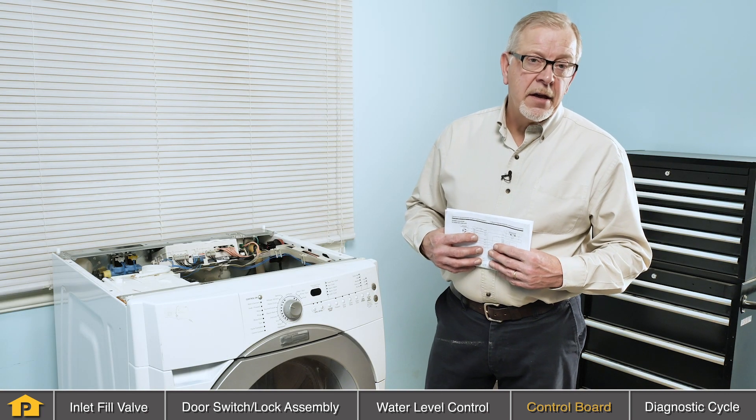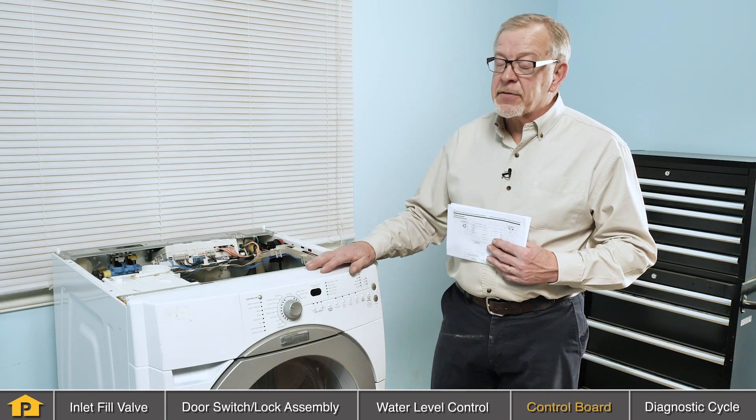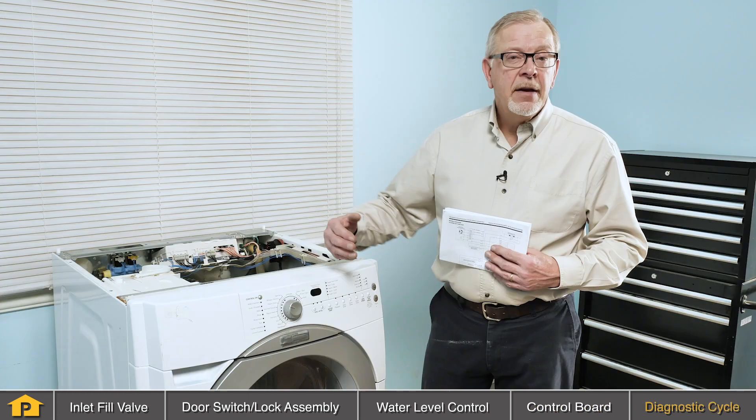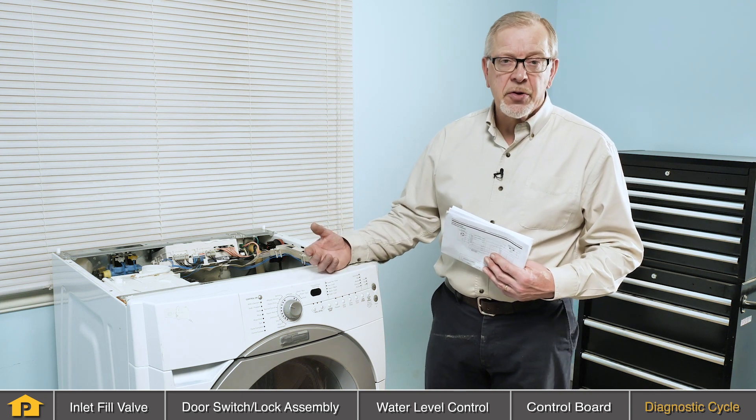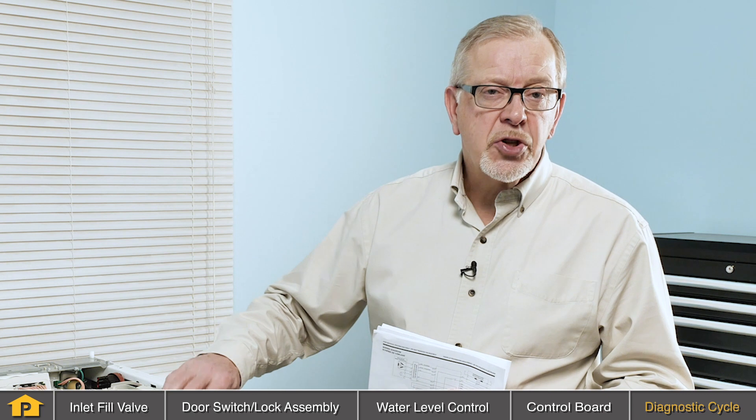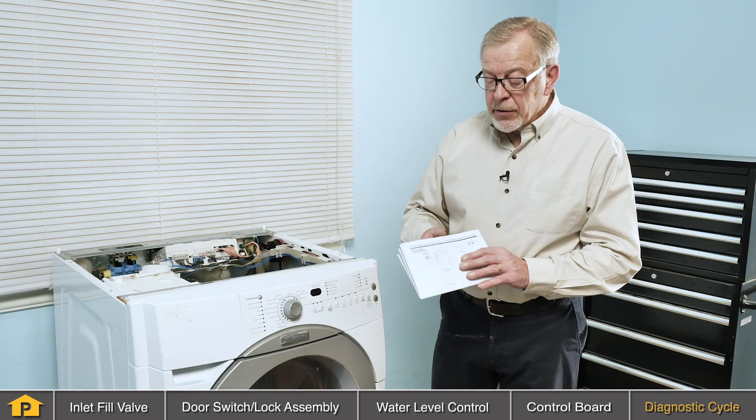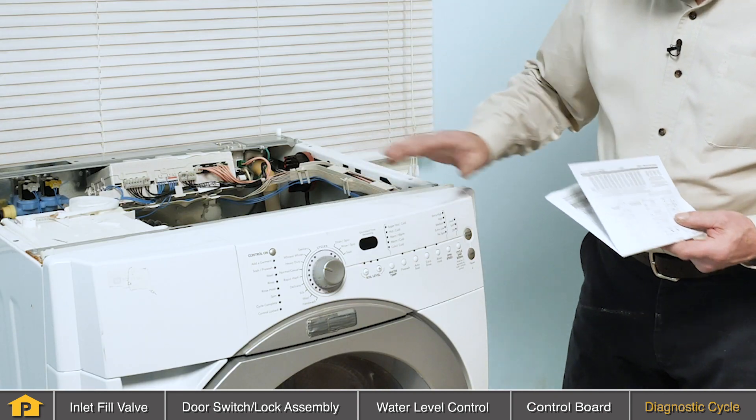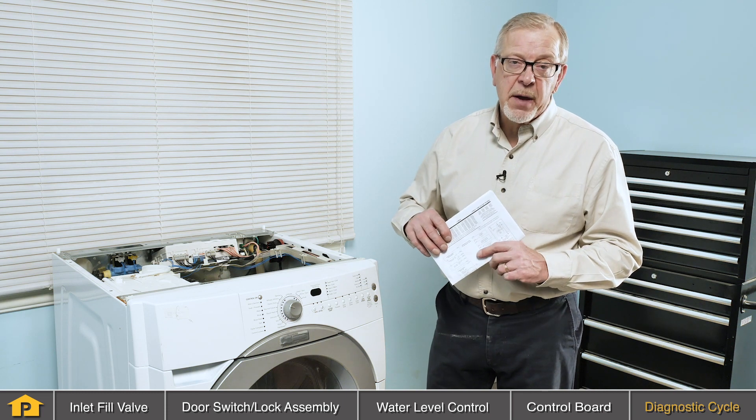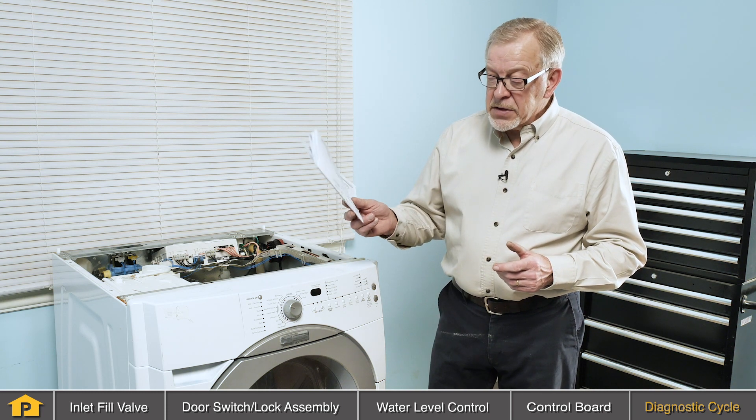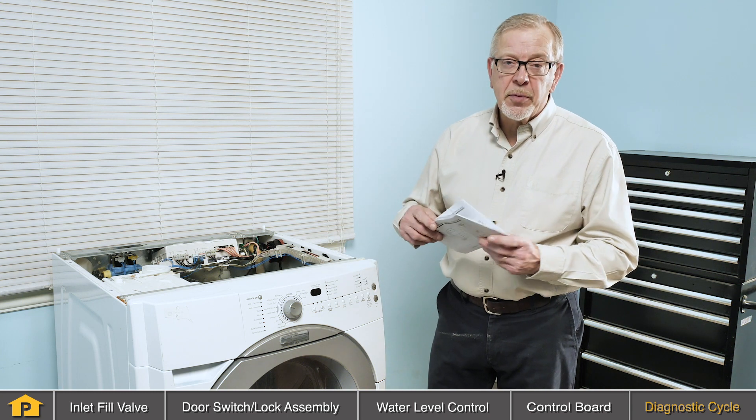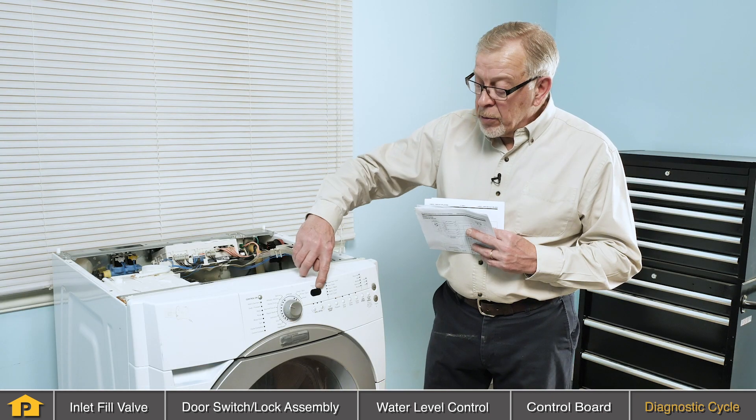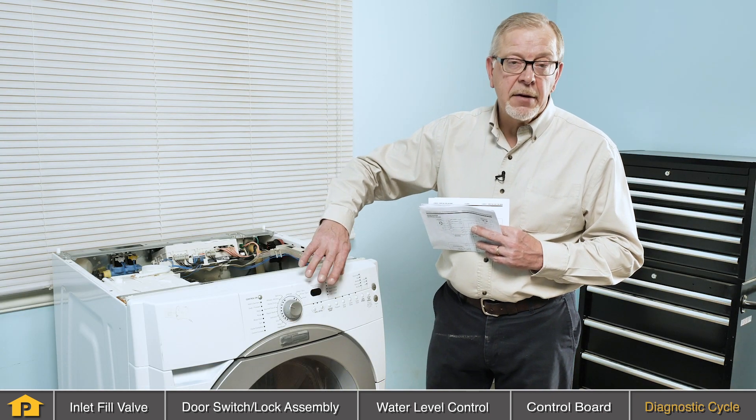With most front-load washers today, the electronics are sophisticated enough that they typically have some self-diagnostics. Normally, you would see a fault code show up on the display if you had a no-fill condition or a no-drain condition or any of the malfunctions. If you can locate the technical information that is packed with the product, it's typically either inside on the main top or below behind the access panel at the front, you'll find some valuable information in there that will help you diagnose your problem. For this particular symptom of a no-fill condition, there would have been a display typically show up to indicate no fill.